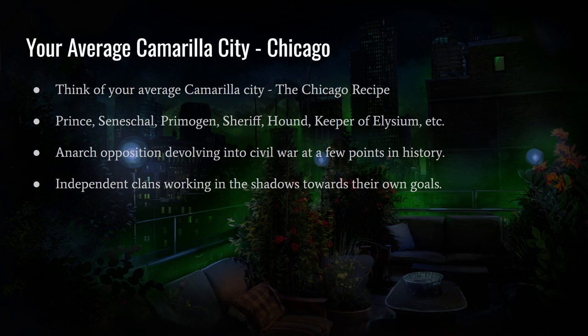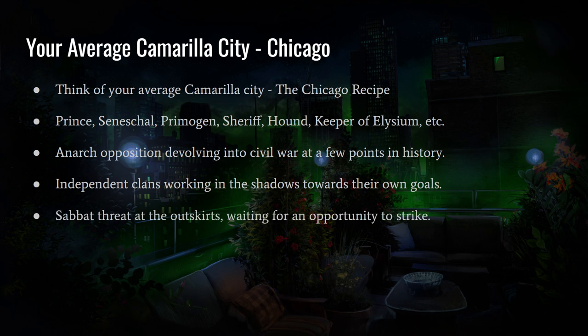The Banu Hakim — the Assamites — were there as well. There was also the Sabbat threat, which I think was introduced in the second edition of Chicago by Night. There are three editions of Chicago: first and second edition before and after the war with the werewolves, and then Chicago by Night for V5, which is the third edition. In the second edition, which came out mid-90s, there was definitely a Sabbat threat at the outskirts of the city, with a pack described in the book.